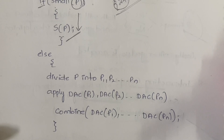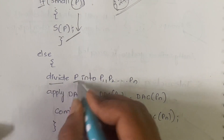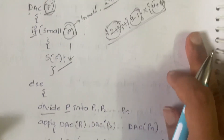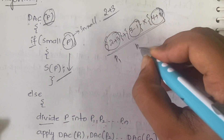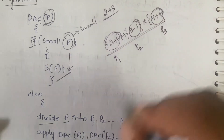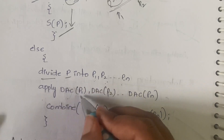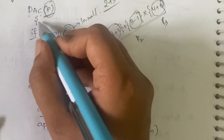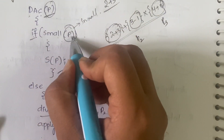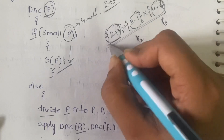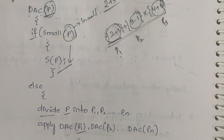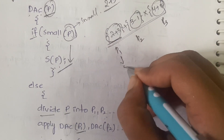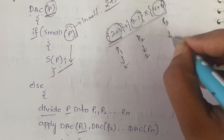If P is not small, you divide P into sub-problems P1, P2, P3, and so on up to Pn — in this case we are dividing into four sub-parts. Then you apply divide and conquer on P1, and so on. Inside each sub-problem, if it is still bigger you can divide further; if it is smaller you solve it directly. For example: 2+3=5, 3−1=2, 4+8=12.